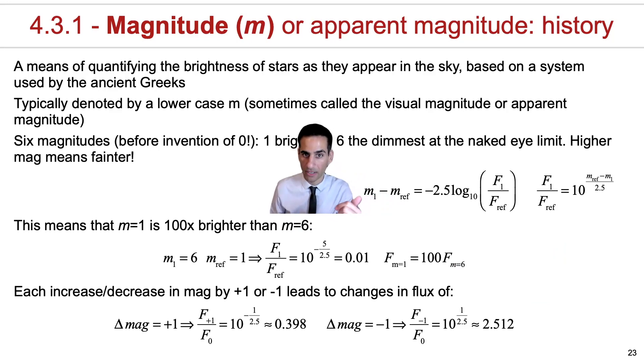So a magnitude one minus some reference magnitude is equal to minus 2.5 log 10 of the ratio of the fluxes, the flux of your star one and the flux of your reference. In other words, you can write this simply in terms of a ratio of fluxes: flux one divided by the reference flux is equal to 10 to the power of m_ref minus m_1 over 2.5.